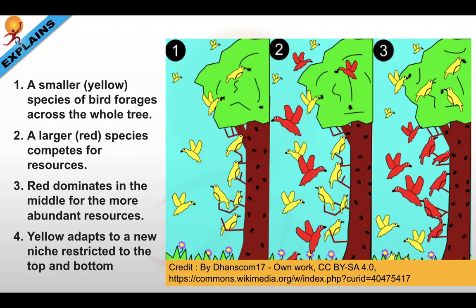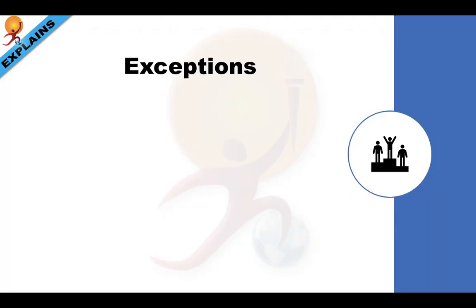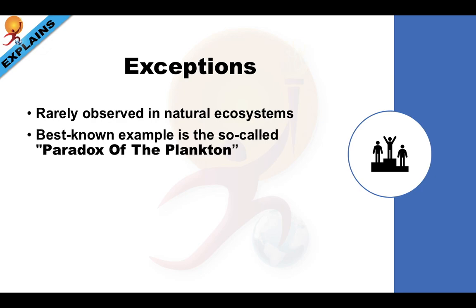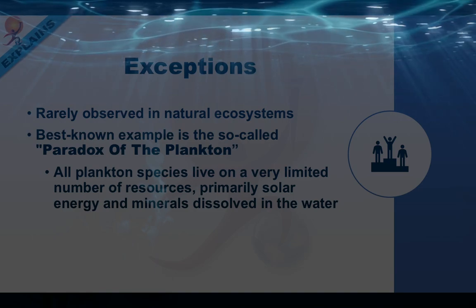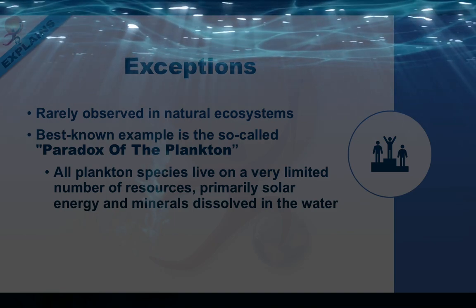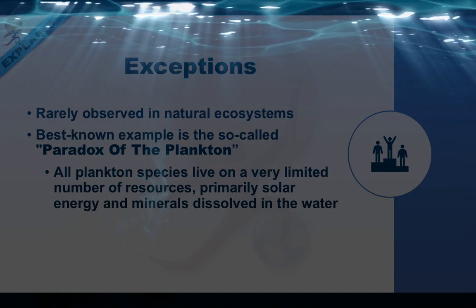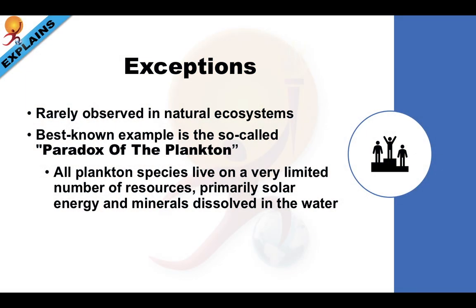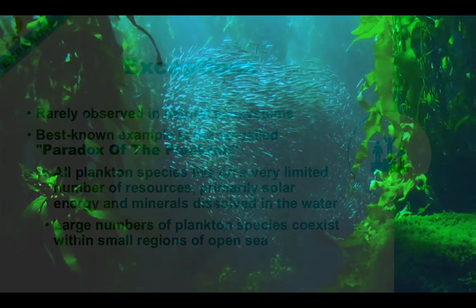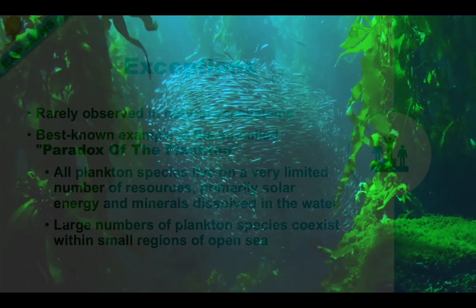Still, there are many exceptions to this law. Competitive exclusion is rarely observed in natural ecosystems, and in fact many biological communities appear to violate Gause's law. The best known example is the so-called paradox of the plankton. All plankton species live on a very limited number of resources, primarily solar energy and minerals dissolved in the water. According to the competitive exclusion principle, only a small number of plankton species should be able to coexist on these resources. Nevertheless, large numbers of plankton species coexist within small regions of open seas.